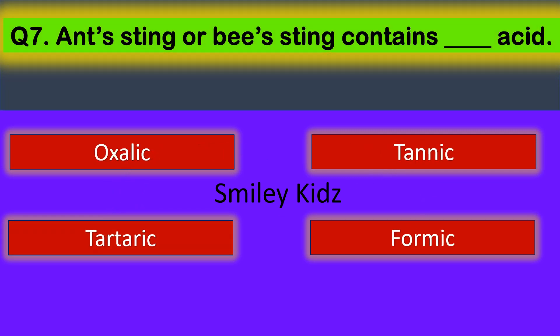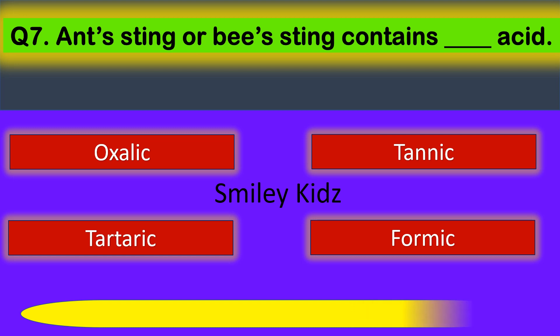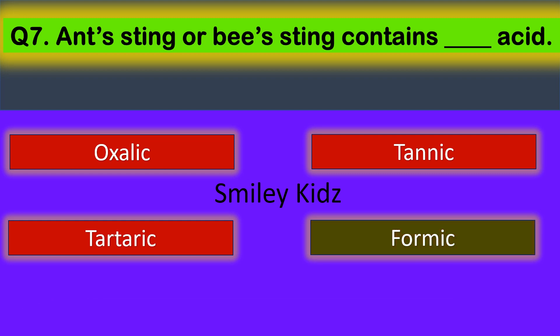Question number seven: bee sting contains dash acid. Your options are oxalic, tannic, tartaric, and formic. Your time starts now. Your time is up. The correct answer is formic — bee sting contains formic acid.